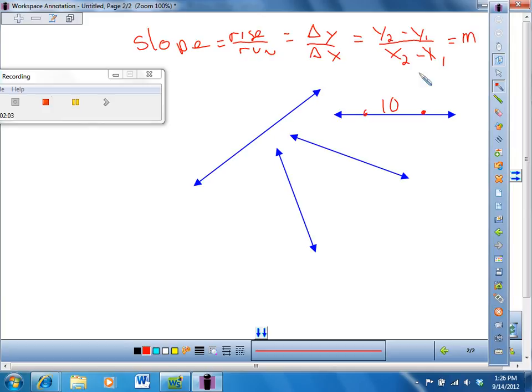I could go over 10. How much did I go up or down? Zero. So it would be zero over 10, right? Which is equal to zero, if I went between two points that were 10 units apart. So positive is this way? Positive, this is positive. These are both negative. This line has zero slope.